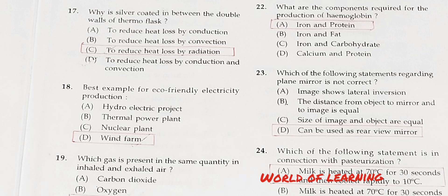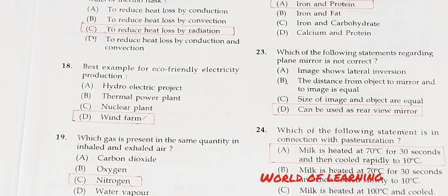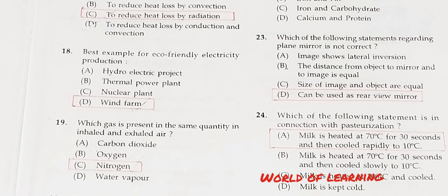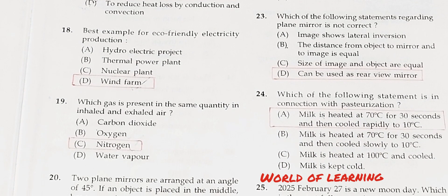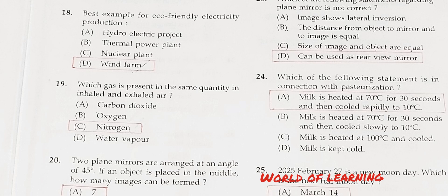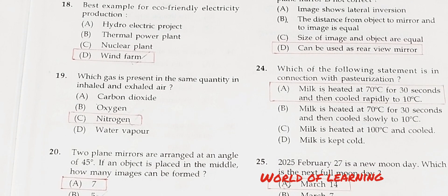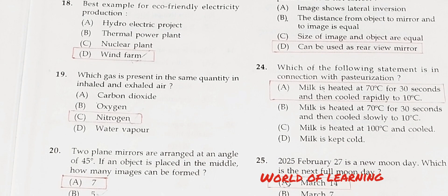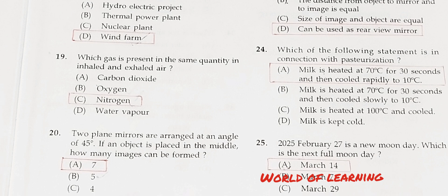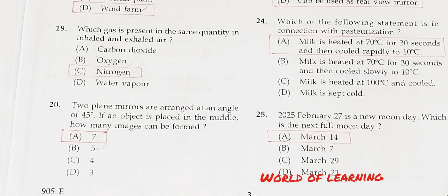Question 18: Best example for eco-friendly electricity production. Option A: Hydroelectric project. Option B: Thermal power plant. Option C: Nuclear plant. Option D: Wind farm. Correct answer is Option D, wind farm.